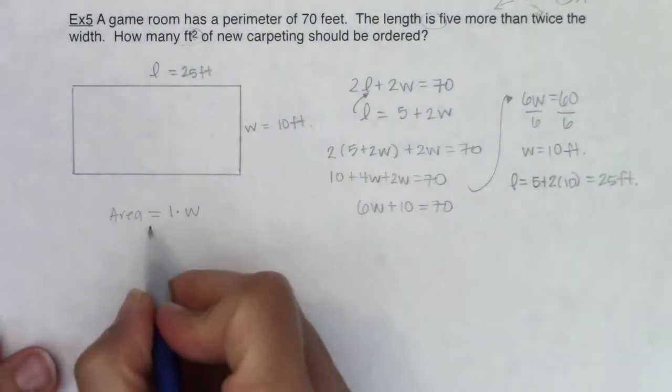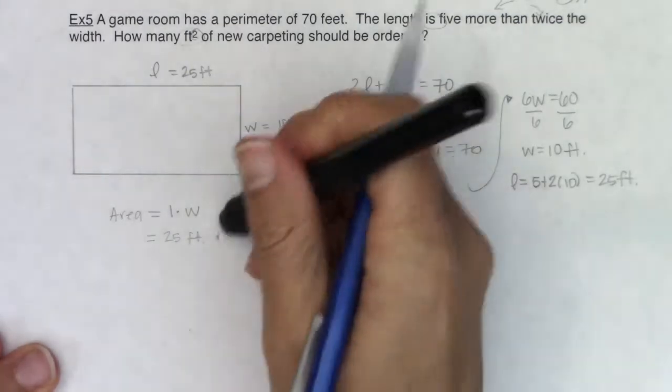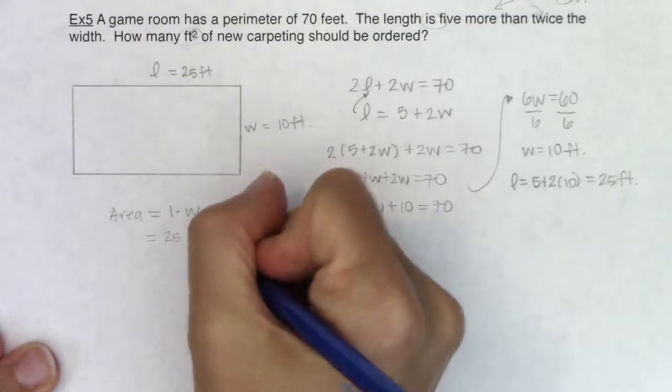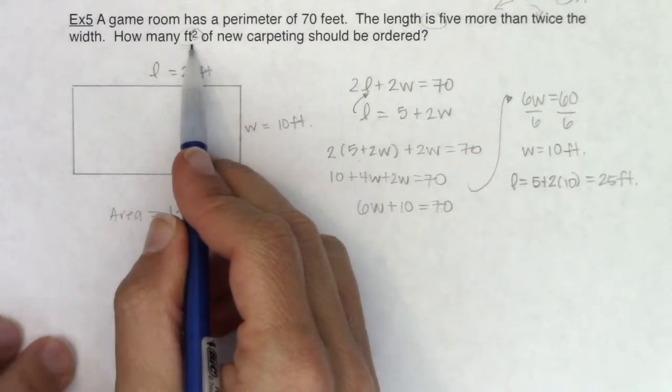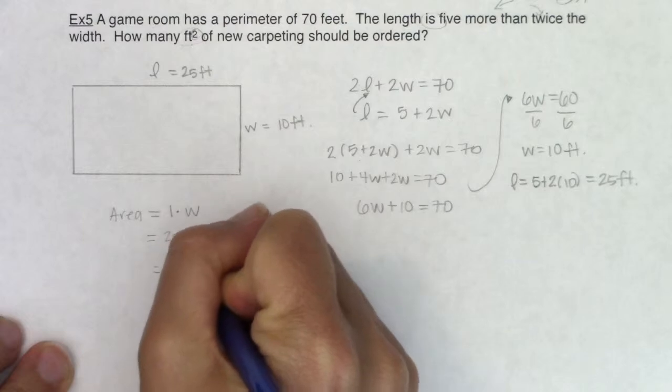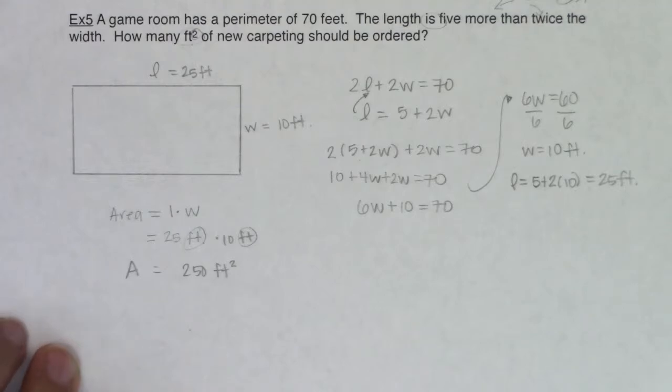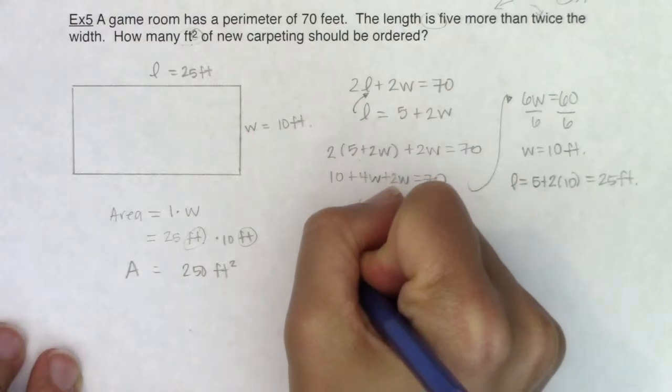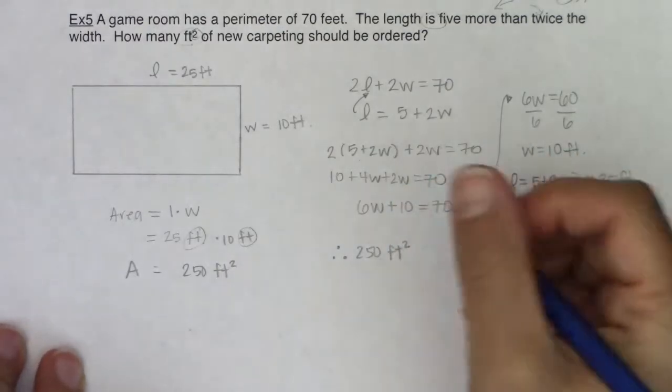I'll play out the units so you can see the square feet pop up. The length was 25 feet and the width was 10 feet. Feet times feet gives you feet squared—that's how the units interact. 25 times 10 is 250, so I have 250 square feet of carpeting that should be ordered.